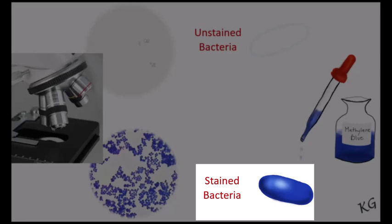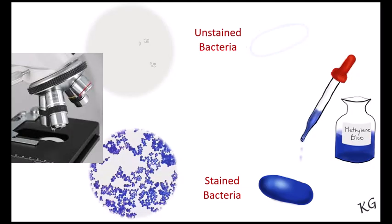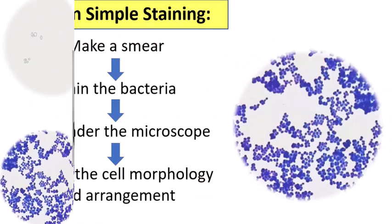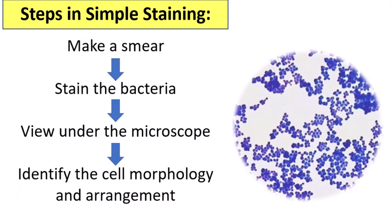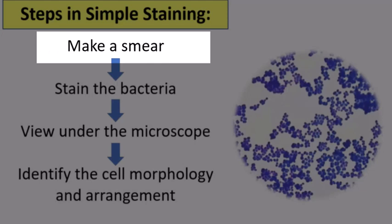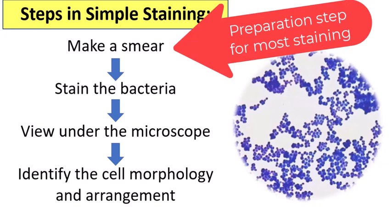In most biology courses, the very first stain you do is a simple stain. During this lab, you learn several important things. First, how to make a bacterial smear. This is a preparation step that's used in almost all the rest of the staining procedures you will learn.